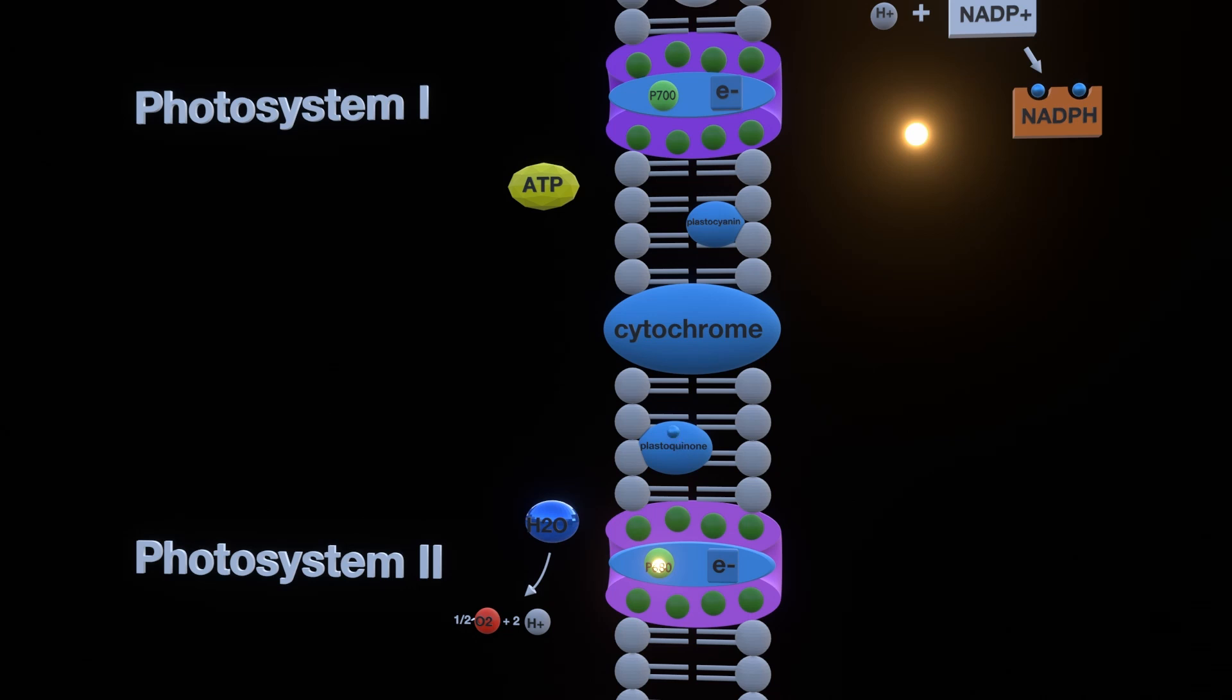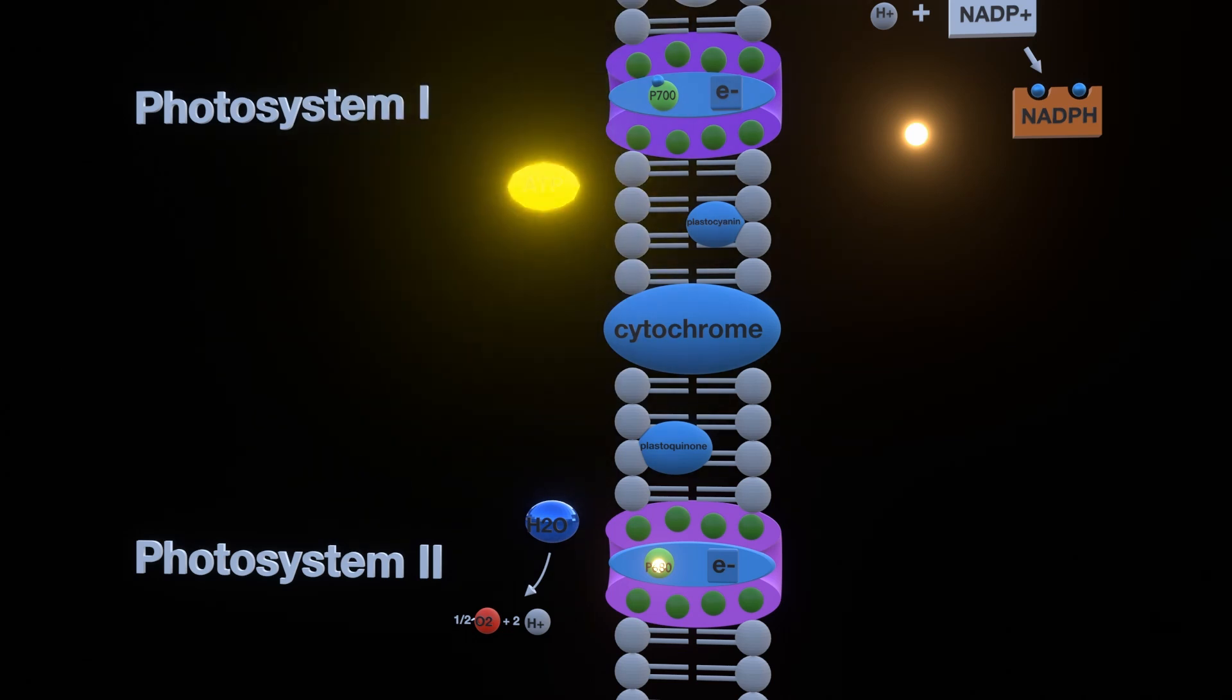The first protein on its way is called plastoquinone. Right after we have the cytochrome complex, responsible for getting the electron from photosystem 2 to photosystem 1. And lastly it goes to plastocyanin. The electron energy state lowers with every protein that it reaches and the energy that is lost is absorbed by ATP, which is a very important part of photosynthesis.